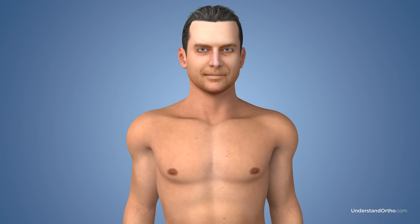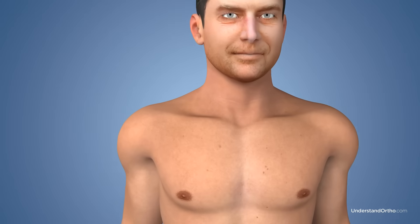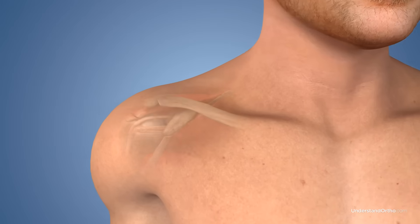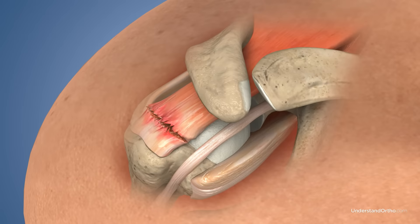A torn rotator cuff is a common condition that can cause shoulder pain, weakness, and loss of mobility. If the tear is severe enough, surgical intervention is often necessary to repair the rotator cuff and to restore shoulder function.